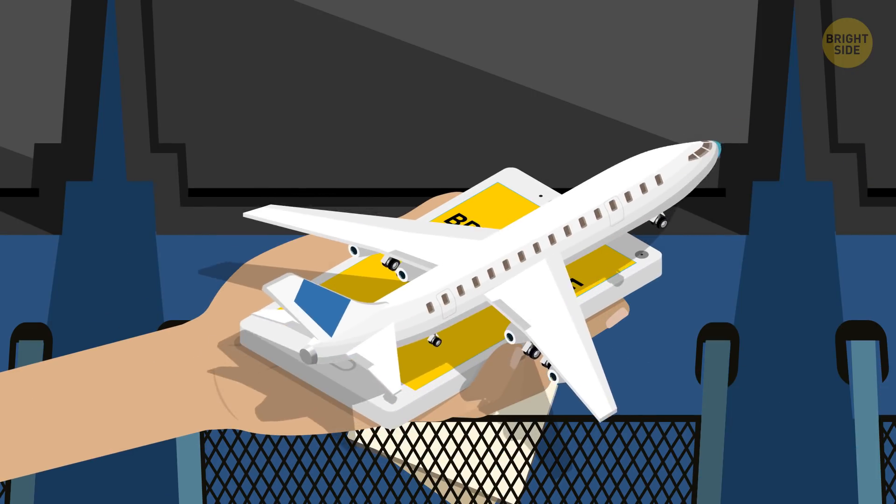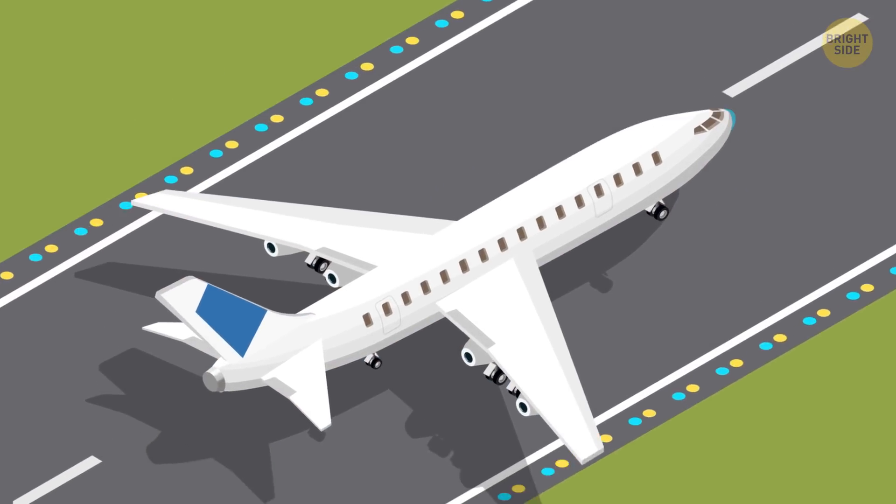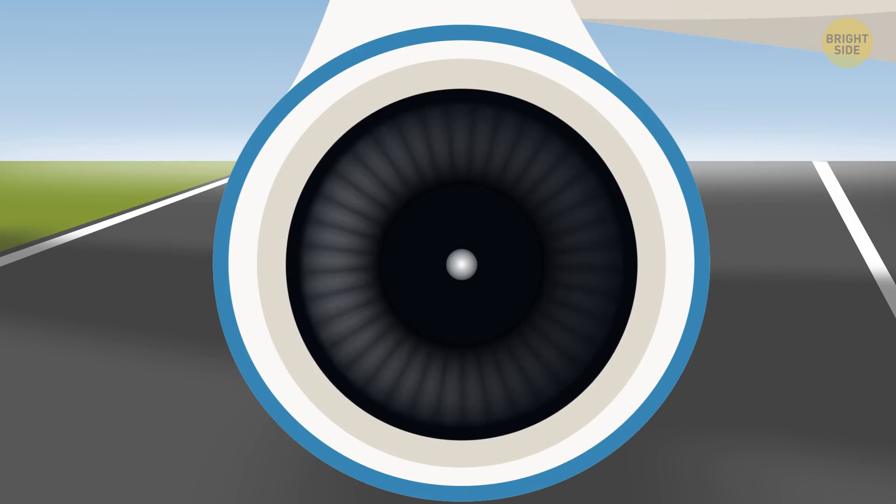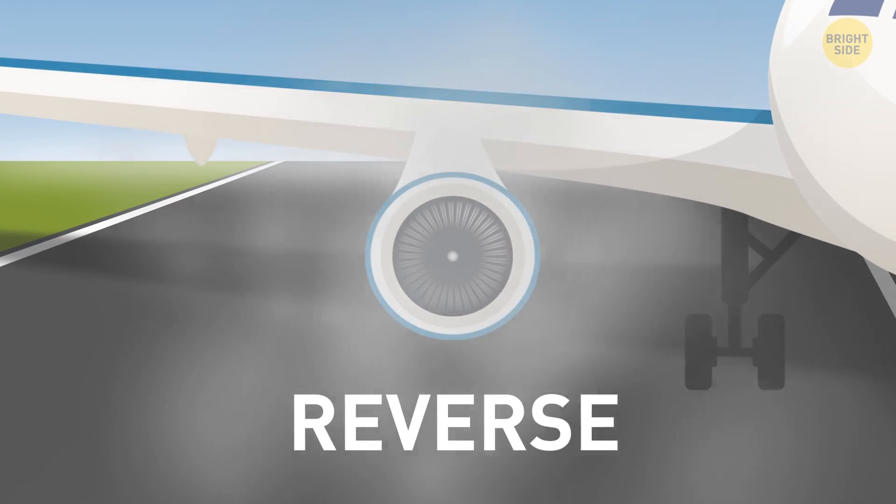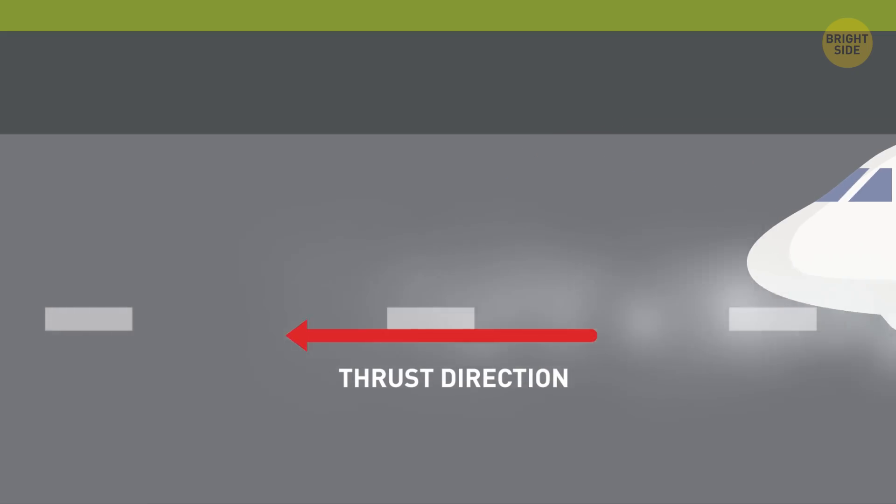Despite what many people think, moving backward isn't entirely impossible for an aircraft. Of course, if we talk about traveling on the ground, it's another matter that they never do. Some planes can perform a so-called power back, which is the very thing that makes it move in reverse. In this case, a plane's jet engines direct the thrust forward instead of backward.